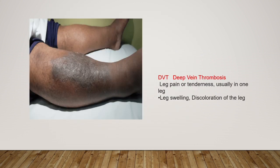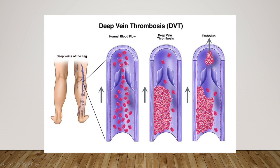When will a doctor order this test? When a doctor suspects DVT — deep vein thrombosis — the patient will usually have severe pain in the leg, swelling, discoloration, and color change in that leg. At that time, the doctor will order this test. In normal blood vessels, blood flows freely, but in DVT, a clot forms. Part of that clot can break off and travel as an embolus, which can go to the heart and cause a heart attack, or go to the brain.